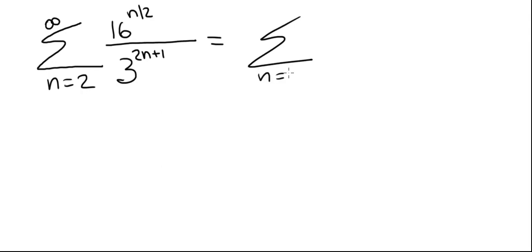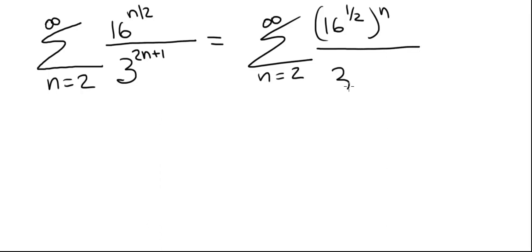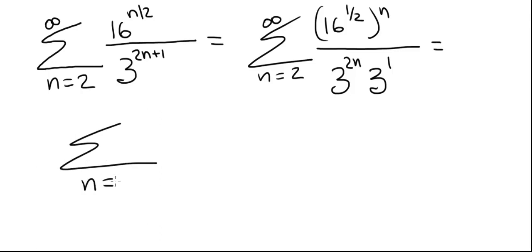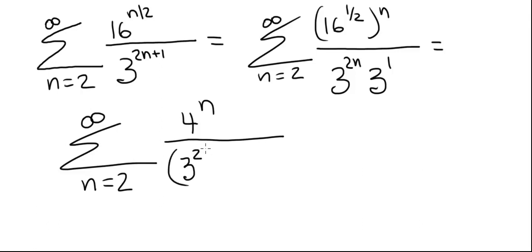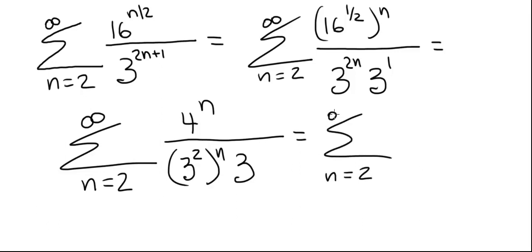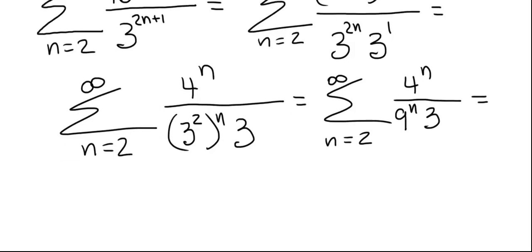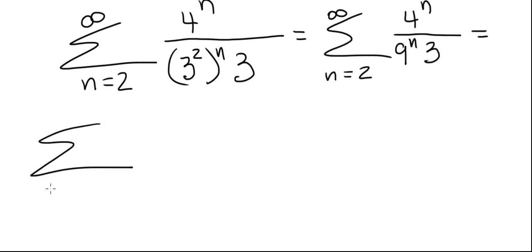Let's rewrite it in the following way. This is the summation from 2 to infinity of 16 to the 1/2 raised to the nth power, divided by 3 to the 2n times 3 to the 1st. Since 16 to the 1/2 is 4, this becomes the summation from 2 to infinity with 4 to the n in the numerator. In the denominator, we rewrite 3 to the 2n as 3 squared to the n, then times 3. So this is the summation from 2 to infinity of 4 to the n divided by 9 to the n times 3, and finally we can rewrite it as a more recognizable form of a series.